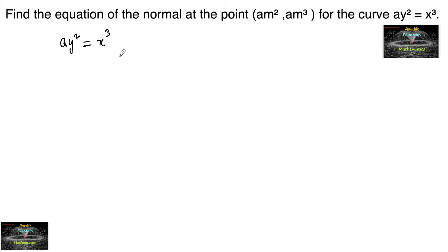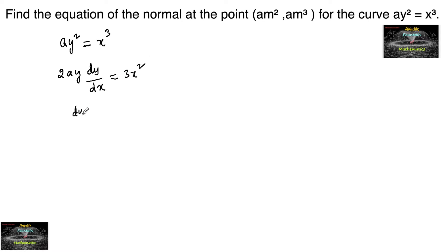Let's find the slope of the tangent by differentiating with respect to x. So we have 2ay · dy/dx = 3x², or we can write dy/dx = 3x² / (2ay).